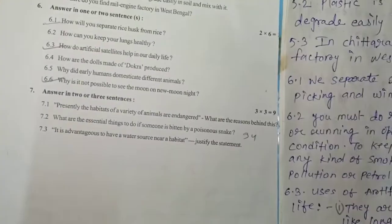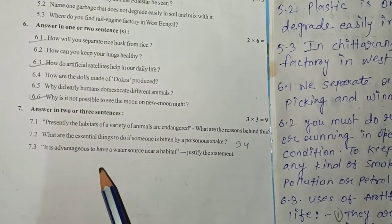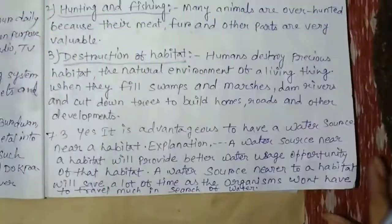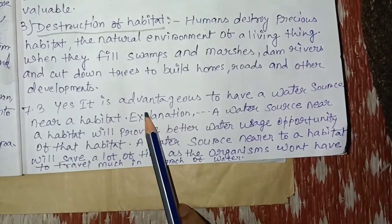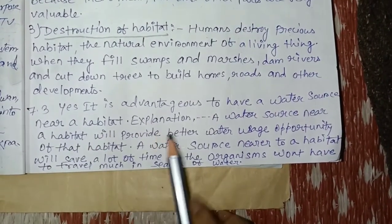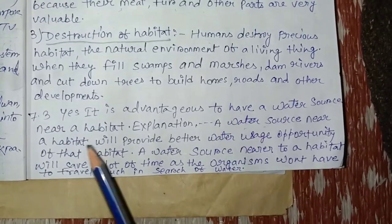7.3: It is advantageous to have a water source near a habitat. Justify the statement. Yes, it is advantageous to have a water source near a habitat.